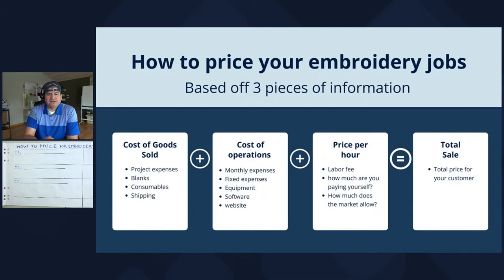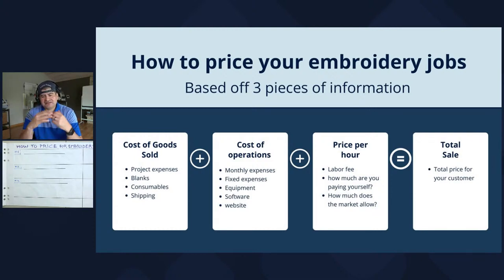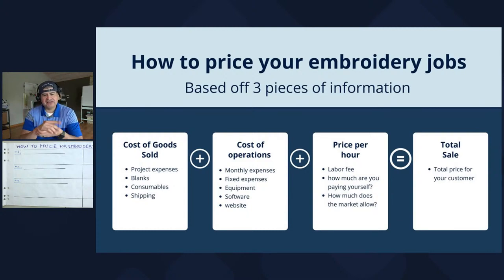Today I'm going to talk about how embroidery pricing revolves around three important numbers. The first is Cost of Goods Sold — another phrase for your expenses per project. This includes your blanks — how much your blanks cost — and your consumables. We'll get into the details of all consumables, including ones we sometimes forget about, but at the end of the day they're all things we pay for.